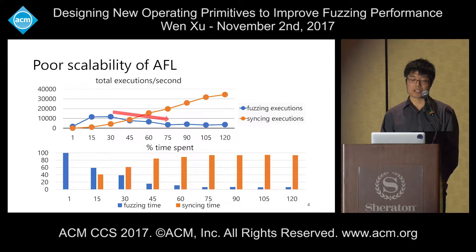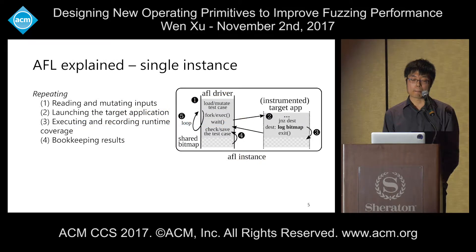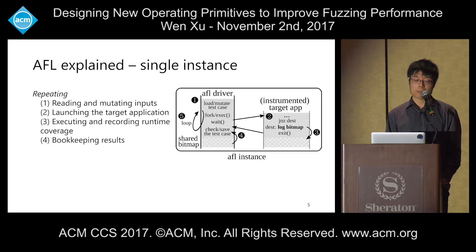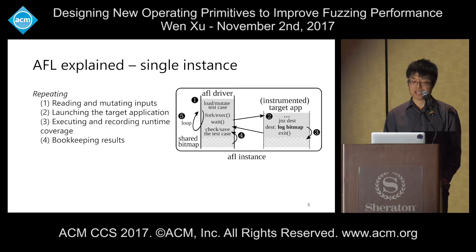Let's look at the working mechanism of AFL to find the bottlenecks. For a single AFL instance, it repeats a fuzzing loop: first it reads and mutates inputs from disk, then launches the target application, feeds the mutated input to it, and during execution records the runtime coverage. Finally, it bookkeeps results if they explore new paths or are considered interesting test cases.